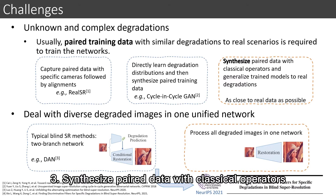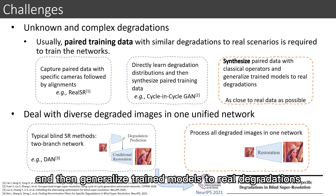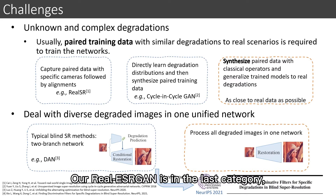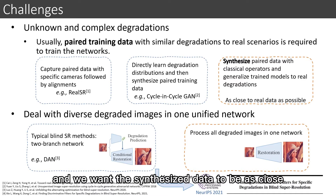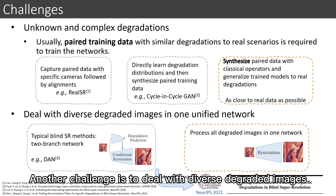The third category is to synthesize paired data with classical operators such as blur and noise, and then generalize trained models to real degradations. Our Real-ESRGAN falls in this last category, and we want the synthesized data to be as close to real data as possible.